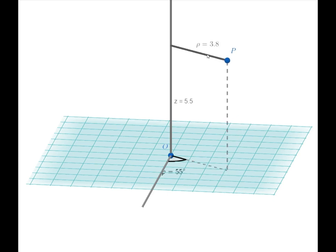So you'll notice as this door swings how the angle changes. You'll notice how as the point gets closer or further away, the value of rho changes. And then as we move the point up or down, the value of Z changes.